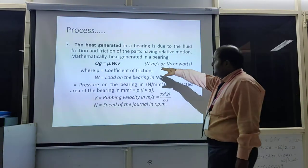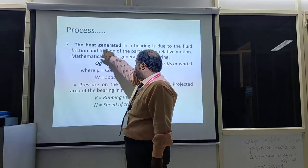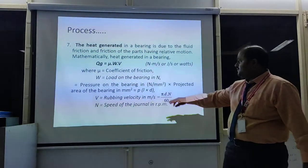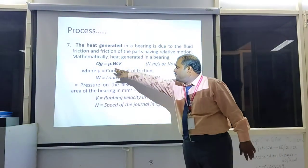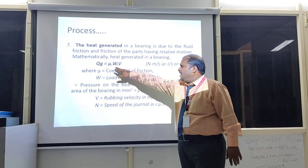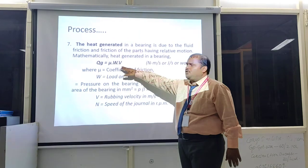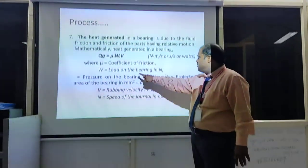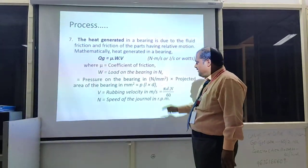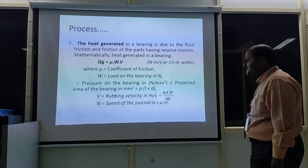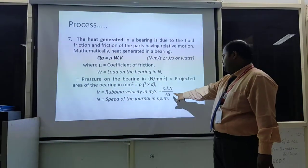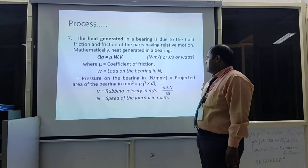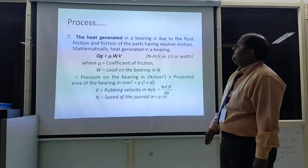Step 7 — determine the heat generated using the formula: QG = μ × W × V, where μ is the coefficient of friction, W is the load on the bearing, and V is the rubbing velocity = πdN/60, where N is the speed of the journal in RPM.